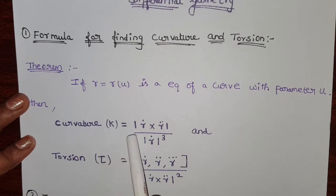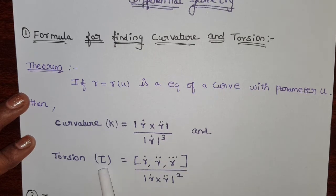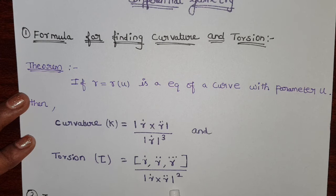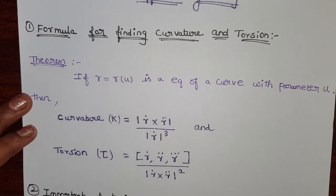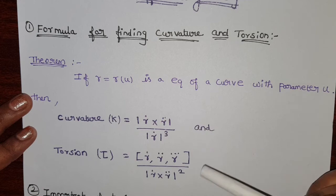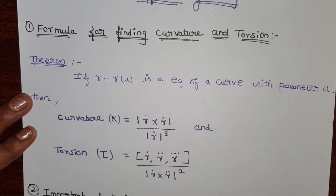Curvature K equals modulus of R dot cross R double dot divided by modulus of R dot cube. And torsion is denoted by the letter tau. Tau equals R dot, R double dot, R triple dot divided by modulus of R dot cross R double dot square. This is the formula for curvature and this is the formula for torsion.